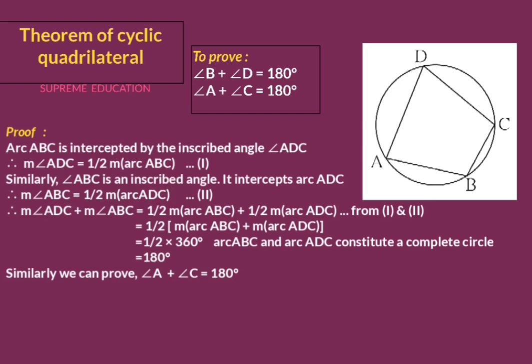Similarly, angle ABC is an inscribed angle and it intercepts arc ADC. By using the inscribed angle theorem again, major angle ABC equals half of major arc ADC. This is statement number two. Now adding statement one and statement two — left-hand side plus left-hand side equals right-hand side plus right-hand side.